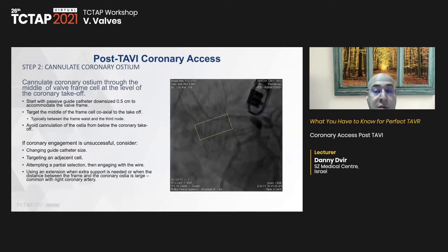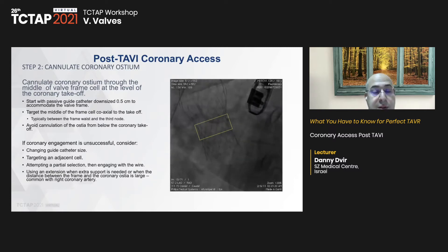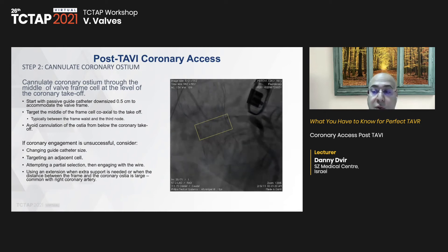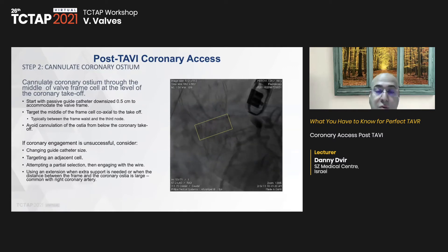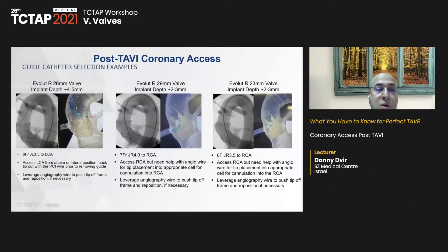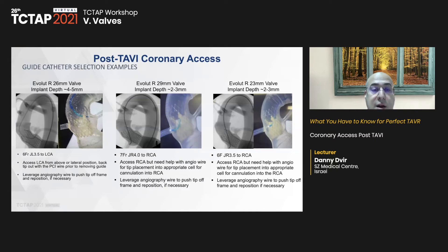For Evolute and CoreValve, commissures are very high and you cannot go through them, so try approaching the coronary slightly anterior or posterior to the previously attempted cell. You can wire the coronary by air-mailing — without sitting fully inside the coronary — and later deliver a guide extension through that path. Bench testing supports using passive equipment and undersizing the guide catheter.